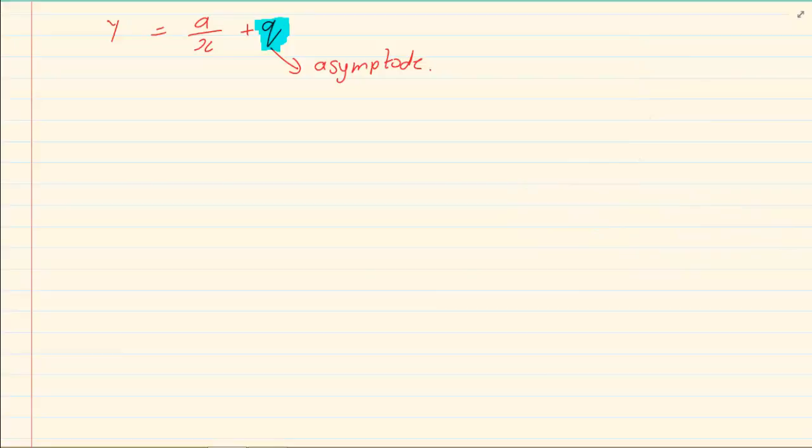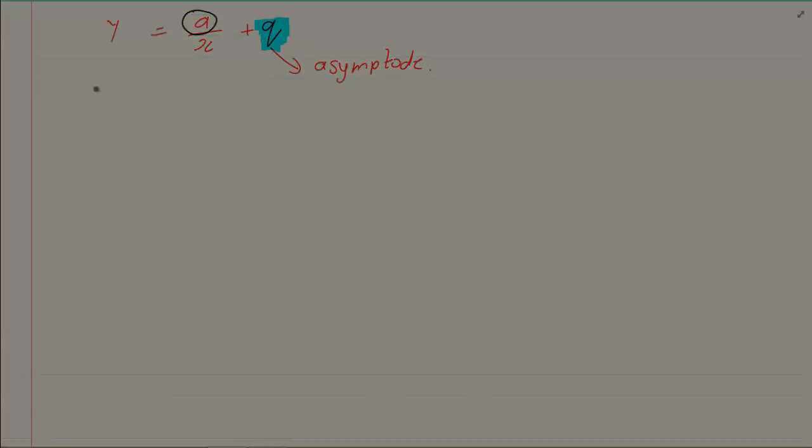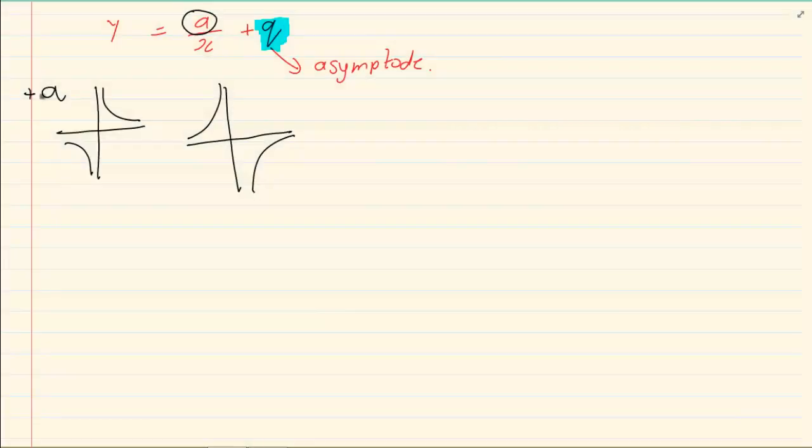Now, we know that q is an asymptote. The a, just like it had a function in parabola, it also has a function in your hyperbola. In the parabola, it told you if I'm happy or sad. In a hyperbola, the positive a tells you if it's in the first and third quadrant. And the negative a tells you that it's in the second and fourth.